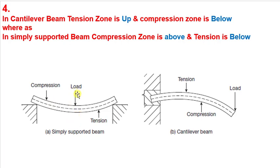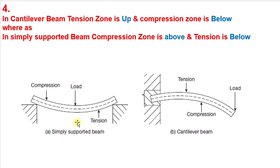This happens because of the position where the load is applied. In a simply supported beam, the load applies at the center of the beam, while in a cantilever beam the load applies at the end or far corner, as you can see in the figure. So to differentiate: in a cantilever beam, tension is on the upper side and compression on the bottom; in a simply supported beam, compression is on the upper side and tension on the bottom.